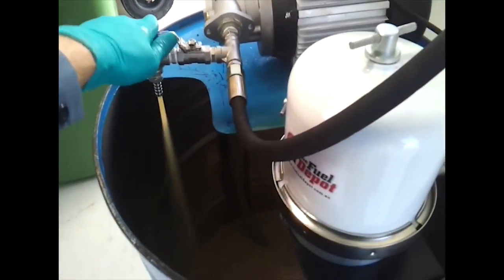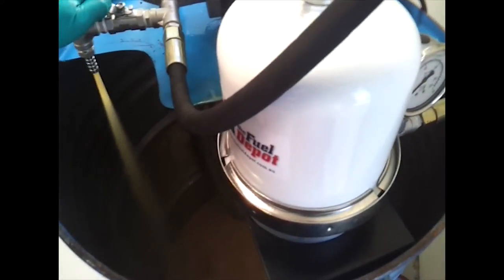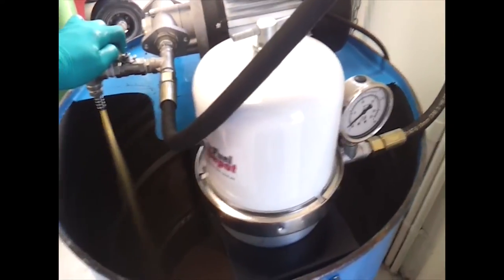As you can see there is almost no flow coming from the centrifuge. Now start delivering more pressure to the centrifuge by closing off the bypass valve.